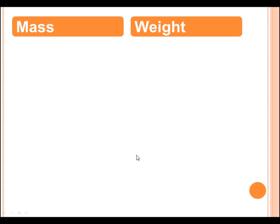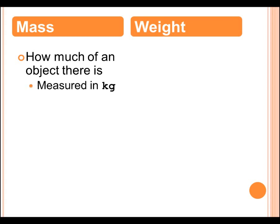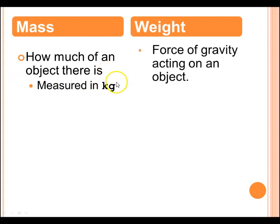All right. Make two columns for mass and weight. This is the remainder of our notes. Mass is how much of an object there is. We measure this in kilograms. So, hey, you've put on a little bit of mass. Oh, thank you for noticing. That was not a nice thing to say. You are measuring that in kilograms.